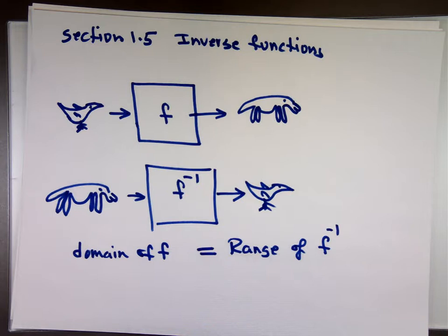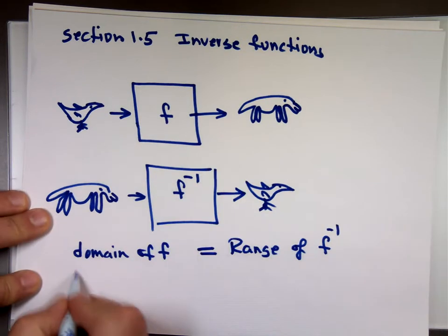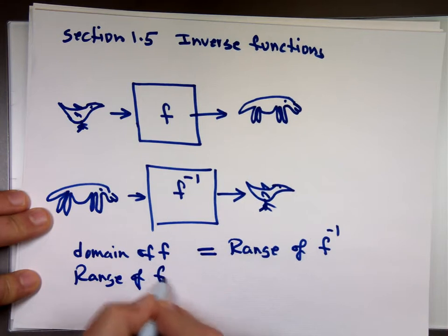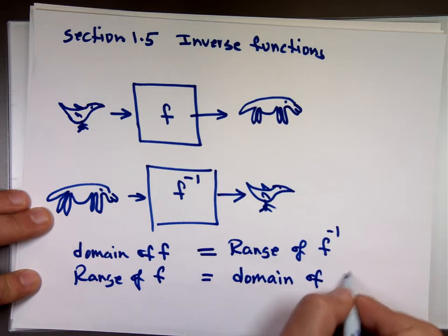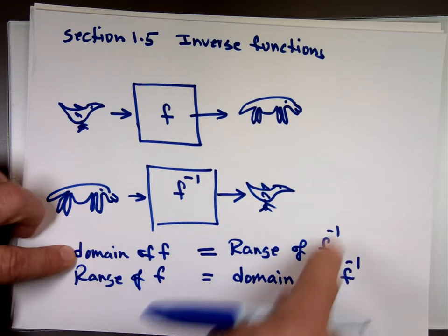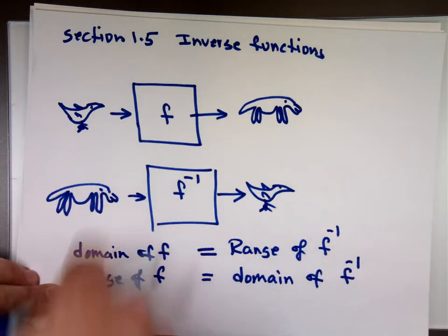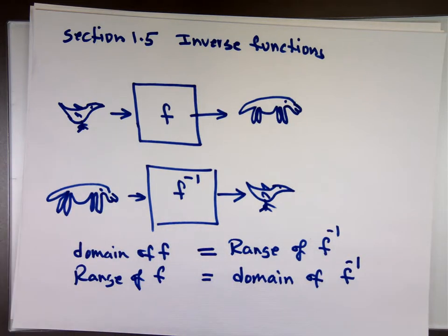What else do we notice? That the range of F is what? Is actually the same as the domain of, so the domain here becomes the range there, the range here becomes the domain there. We flip-flop them.